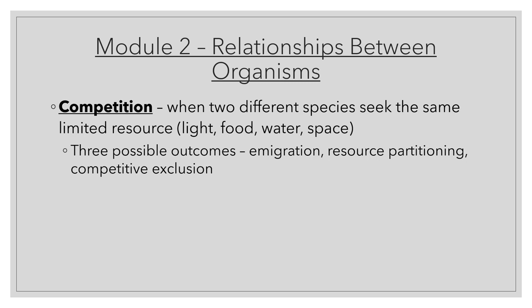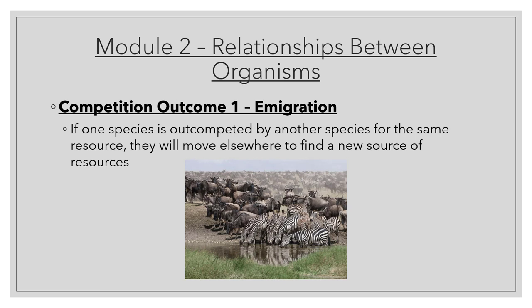Competition: two different species seek the same limited resource. There are basically three outcomes — one organism leaves, they subdivide the resource so they're no longer in conflict, or they die. A specialist would be more likely to go through emigration or competitive exclusion rather than subdividing the resource; that's probably something more that a generalist could do.